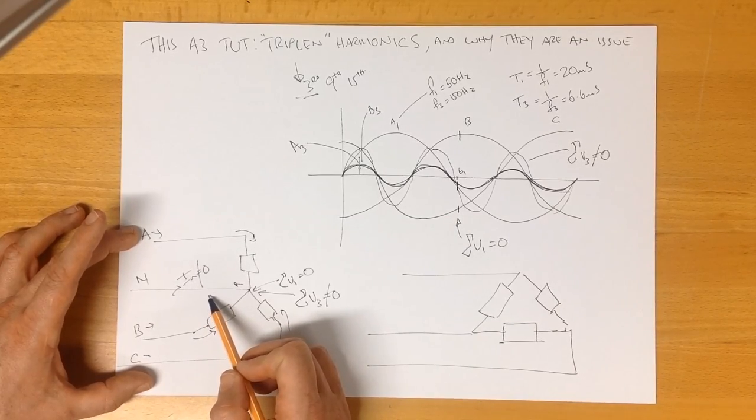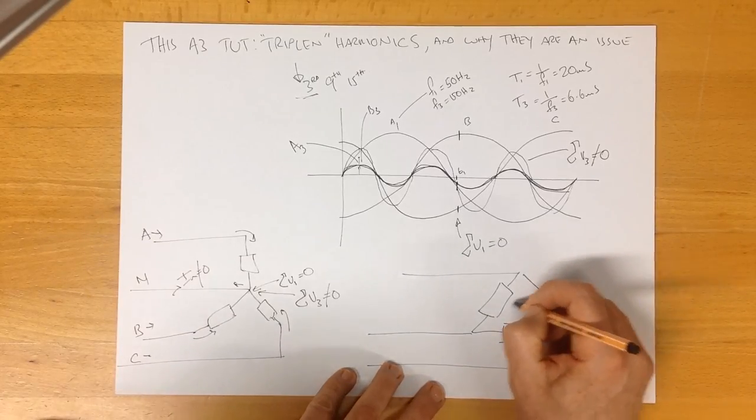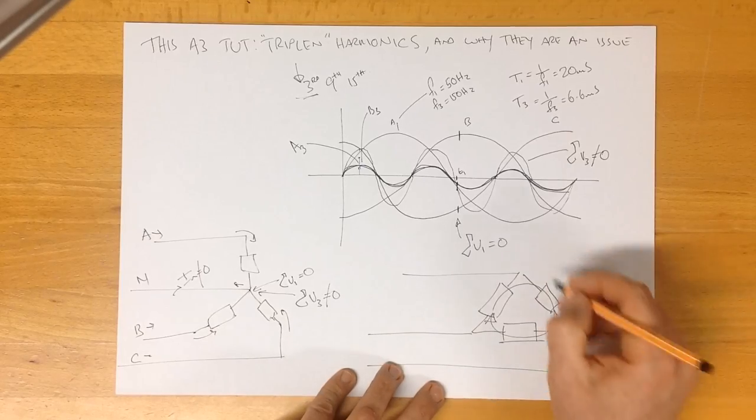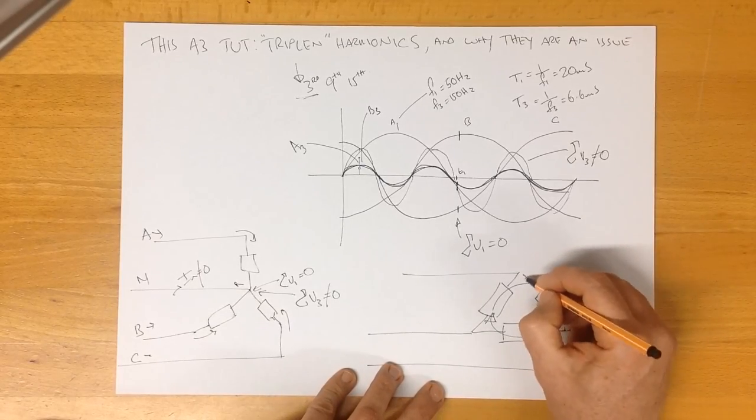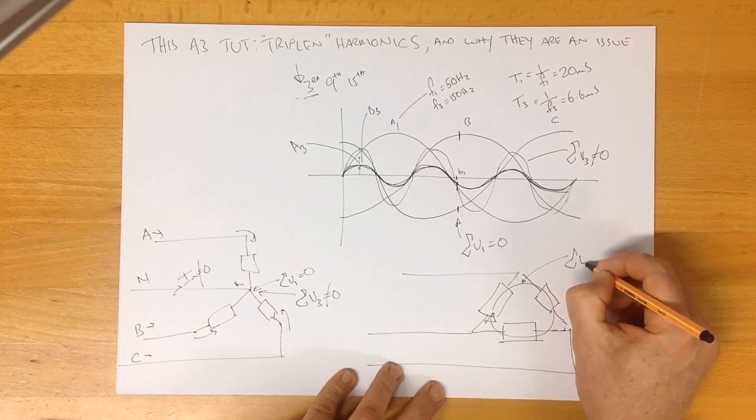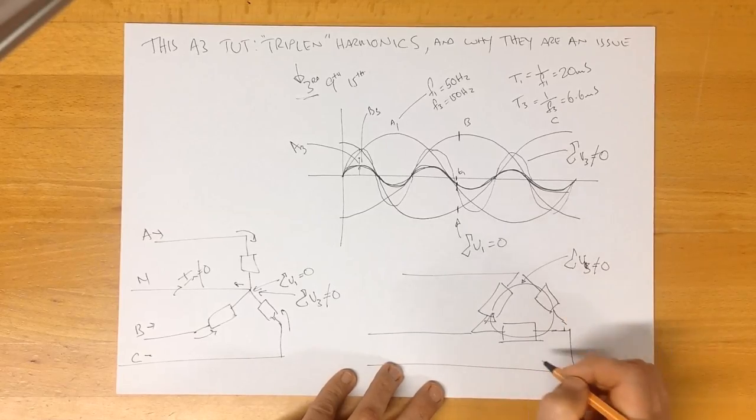So what do they do? They circulate. We end up with our triplen currents going around here. They circulate.